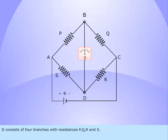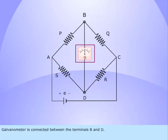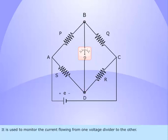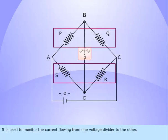It consists of four branches with resistances P, Q, R and S. Galvanometer is connected between the terminals B and D. It is used to monitor the current flowing from one voltage divider to the other.